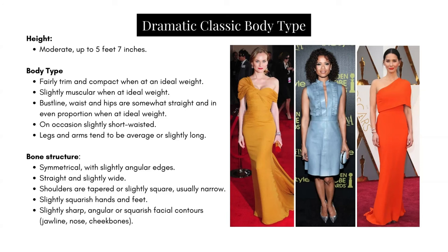Legs and arms tend to be average or slightly long. Bone structure is symmetrical with slightly angular edges — straight and slightly wide. Shoulders are tapered or slightly square, usually narrow. Slightly squarish hands and feet. Slightly sharp, angular or squarish facial contours as seen in the jawline, nose, and cheekbones.